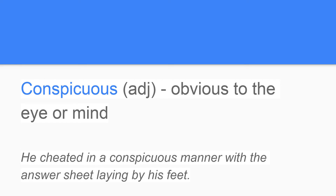Word number 10 is conspicuous. Conspicuous is an adjective, meaning obvious to the eye or mind. For example, he cheated in a conspicuous manner with the answer sheet laying by his feet.